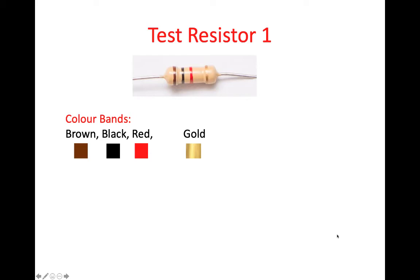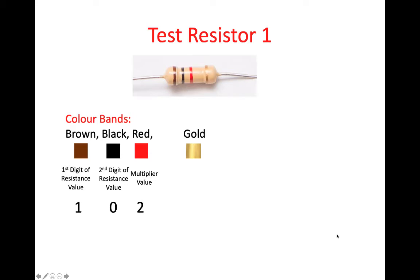The first colour band is brown — that's the first digit of the resistance value, and brown has the value of 1. Black is the second digit of the resistance value, and that has a value of 0. Red is the multiplier value, and red has the digital value 2. And of course, gold is plus or minus 5% tolerance.